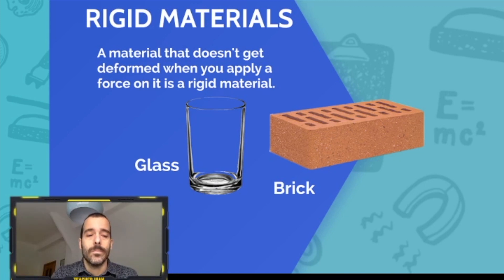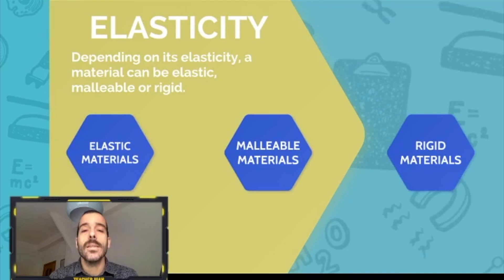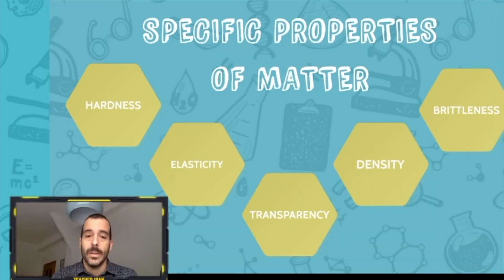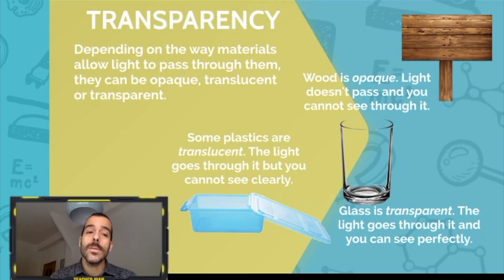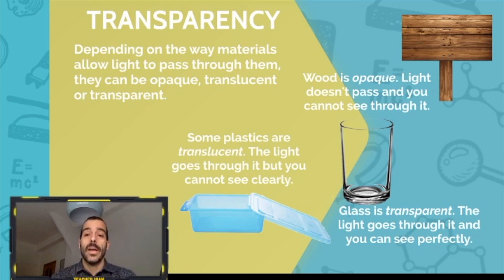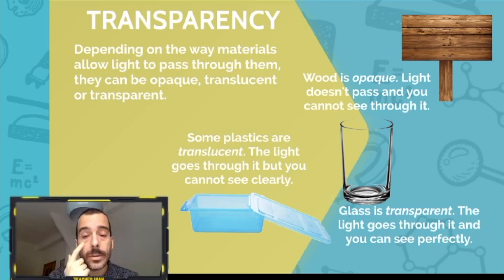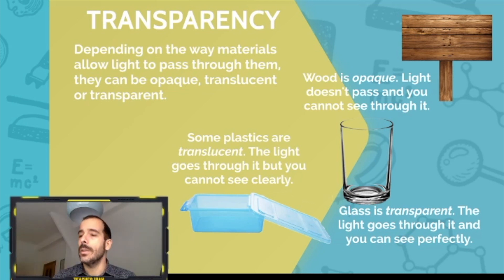So that is elasticity, the second property of matter. Now, transparency. Depending on the way materials allow light to pass through them, they can be opaque, translucent, or transparent. Wood is opaque because light doesn't pass through and you cannot see through it. You also cannot see through paper because it is opaque.